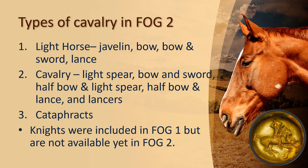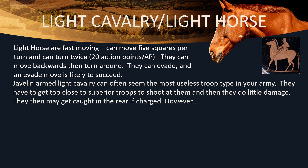The types of horse cavalry are three types. First, light horse, which is split into javelin, bow, sword and lance type troops. Then there's the type actually called cavalry, which is basically heavy cavalry — they can be armed with light spear, bow and sword, half bow and light spear, half bow and lance, and lances. Finally, there are cataphracts, which are the very heavily armed troops. Knights were included in FOG1 but are not available yet in FOG2.